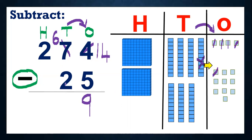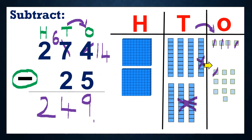Now I need to subtract two from six in the tens place, because we borrowed one ten and now have only six tens. So I will cut one, two tens. When I remove two blocks of tens, how many are left? One, two, three, four — four tens are left. So I write four. Next, here in the hundreds place we have two. Do we have anything to remove? No, right? So I will write two as it is. So I got the answer 249. When we remove 25 from 274, we got the answer 249.